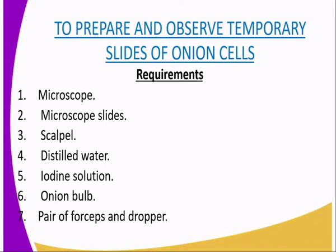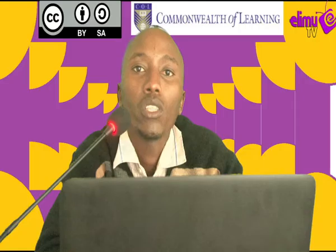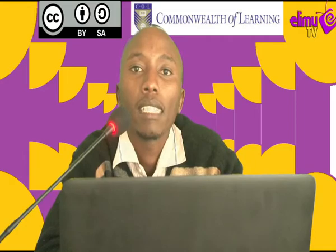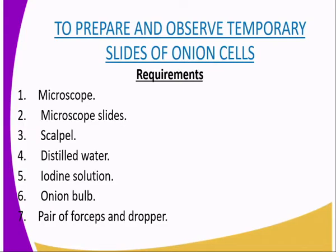To prepare and observe temporary slides of onion cells — and note that it is not only onion cells that have temporary slides, you can prepare as many types as possible, but in today's lesson we are going only to prepare onion cells. There are several requirements needed: first, we require the microscope, which must be very clean, and clean microscope slides.